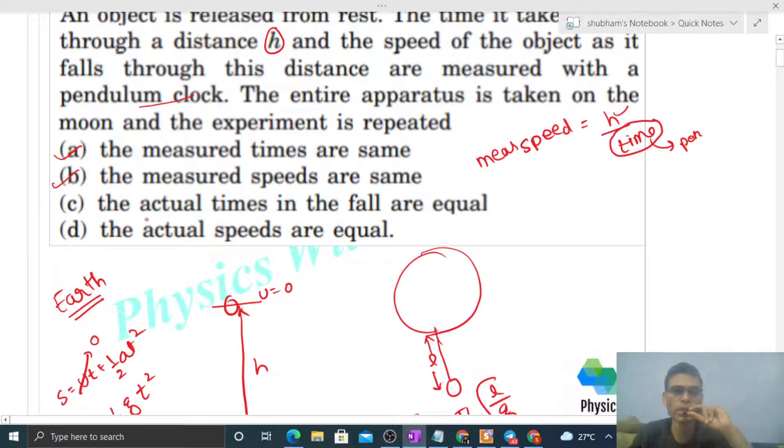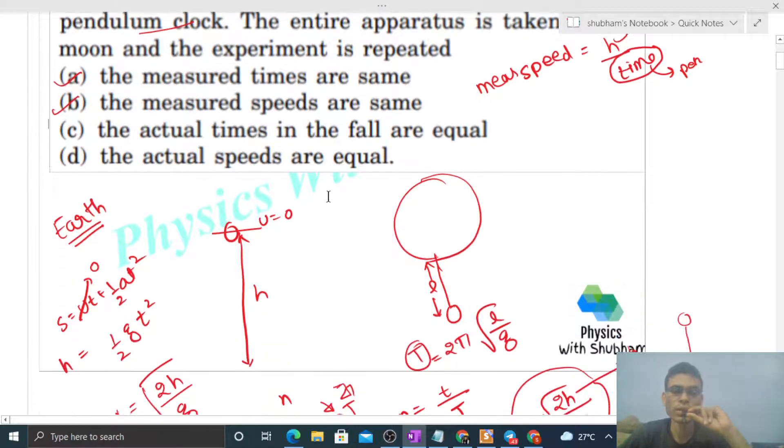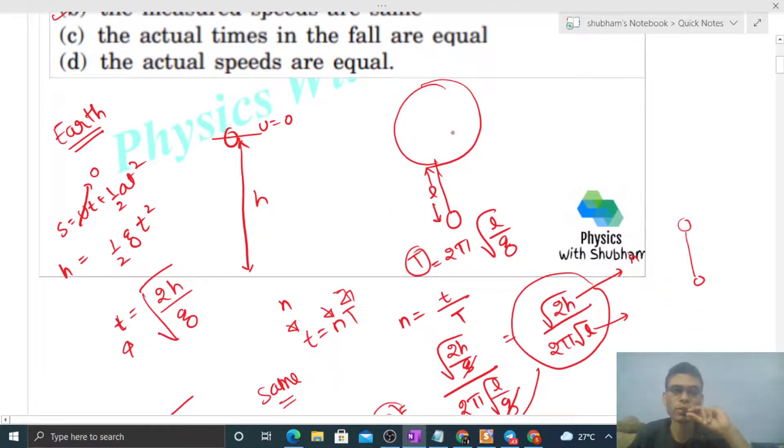You know, b is also correct. The actual times in the fall are equal. Actual time aap kaise measure karoge? Actual time kitna lagega woh g pe depend karega. Dhekho, actual time is this one, 2h by g, this is your t actual. So if the value of g decreases then actual time increase ho jayega, like moon pe jab hum shift honge us time pe yeh jo g hai.